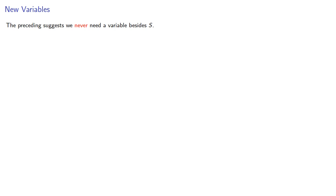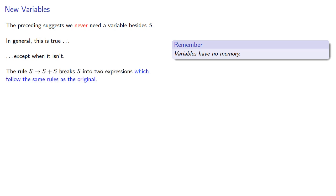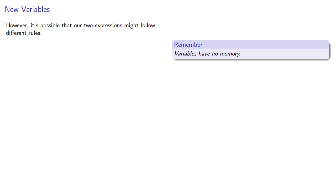The proceedings suggest we might never need a variable besides S. In general, this is true, except when it isn't. Remember, variables have no memory, and so this rule S produces S plus S breaks S into two expressions, which follow the same rules as the original. However, it's possible that our two expressions might follow different rules. For example, in an addition like this, the rule S produces S plus S would allow us to deconstruct this by grouping the first three and grouping the last two.